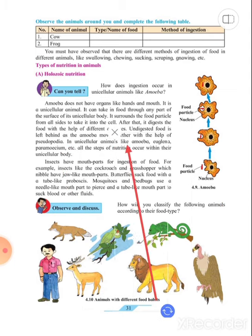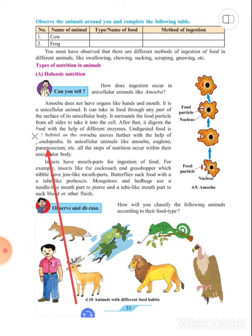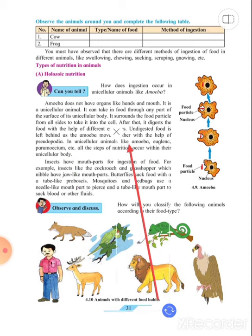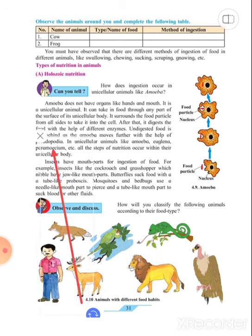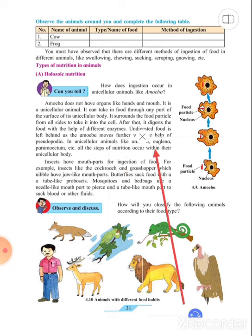In unicellular animals like amoeba, euglena, paramecium, etc., all the steps of nutrition occur within their unicellular bodies. In these unicellular organisms, the nutrition steps are carried out within one cell.